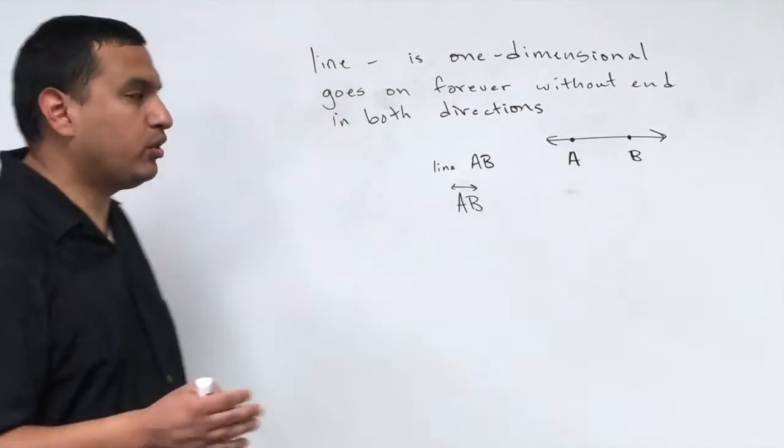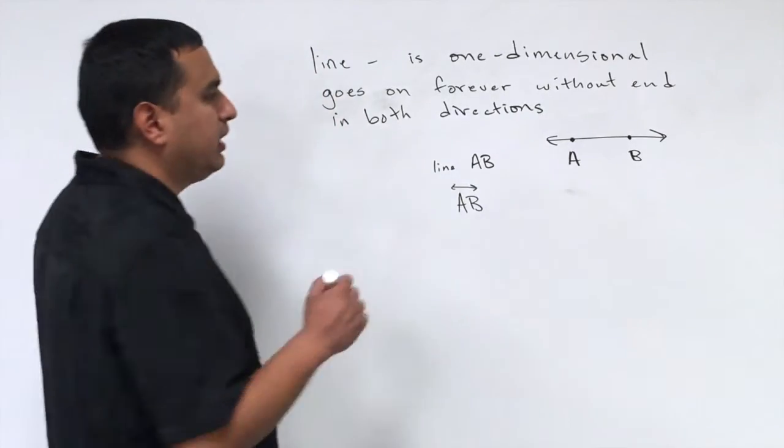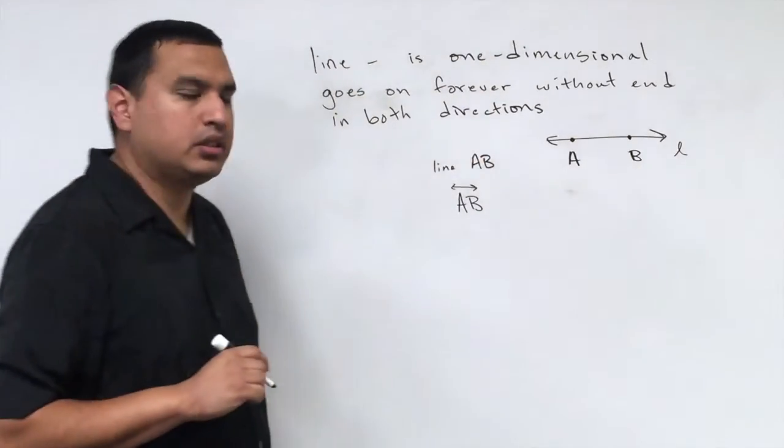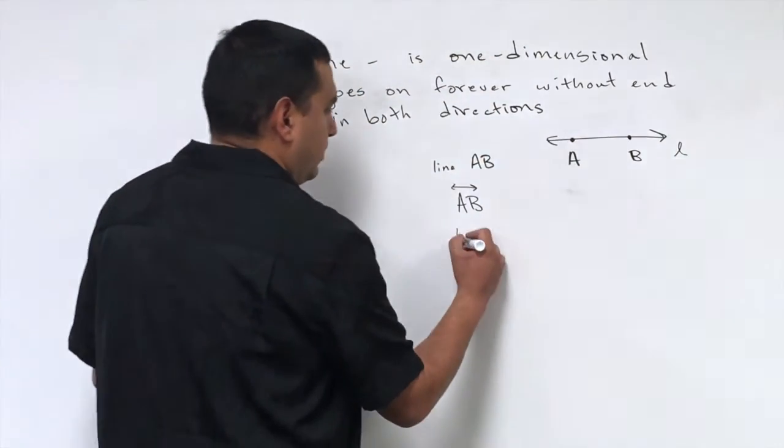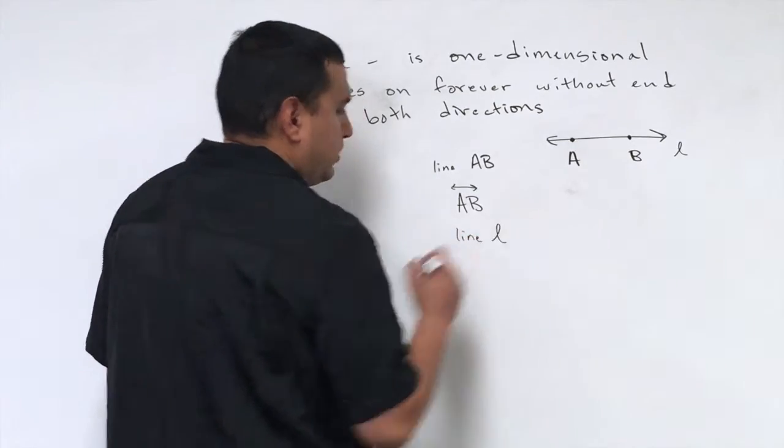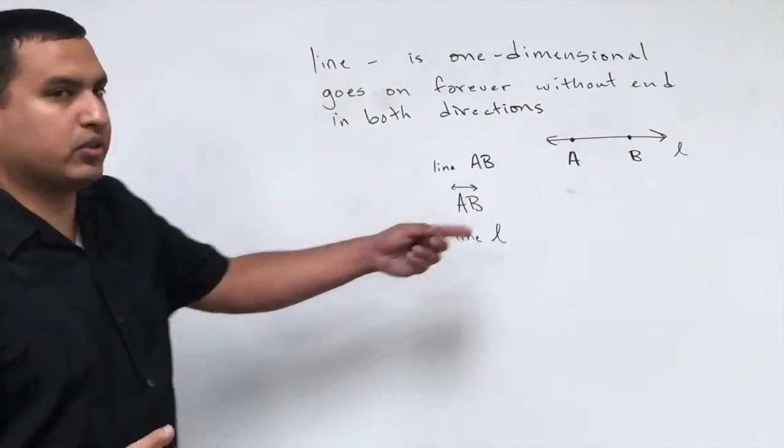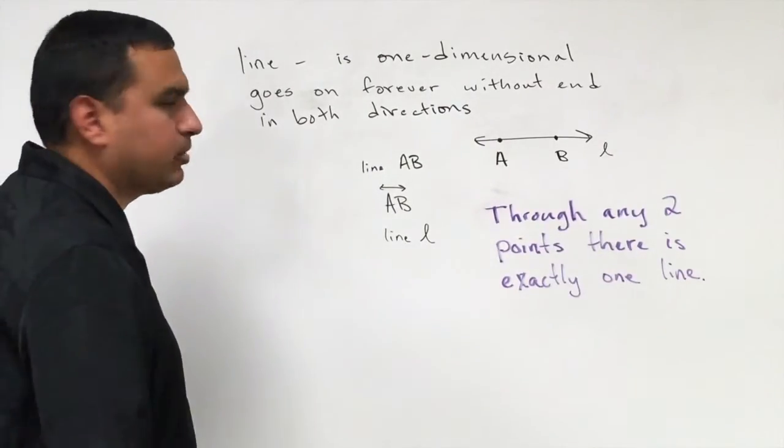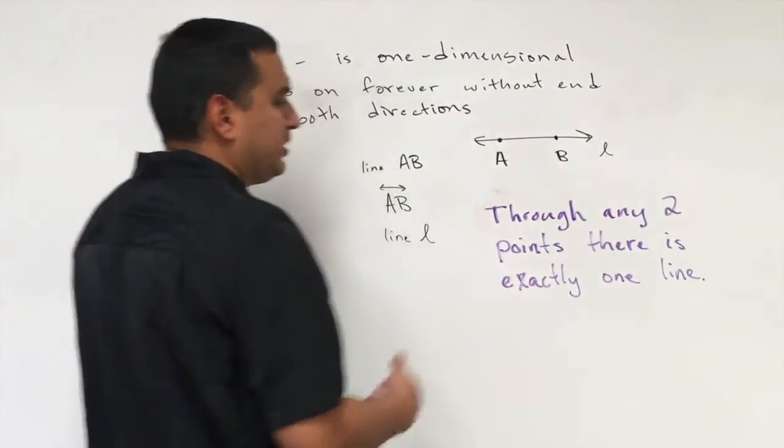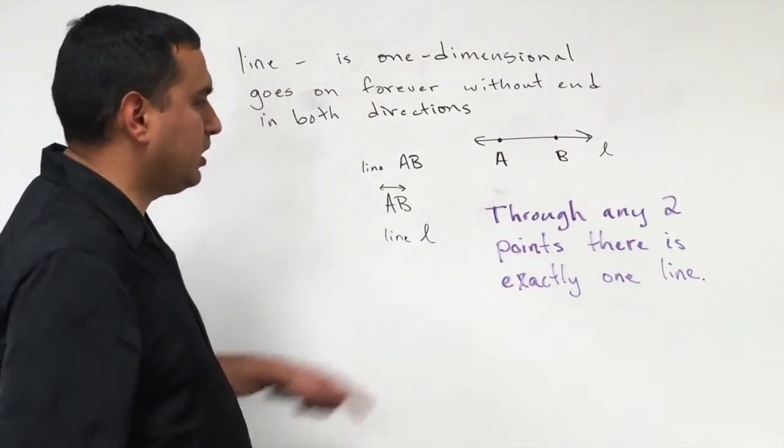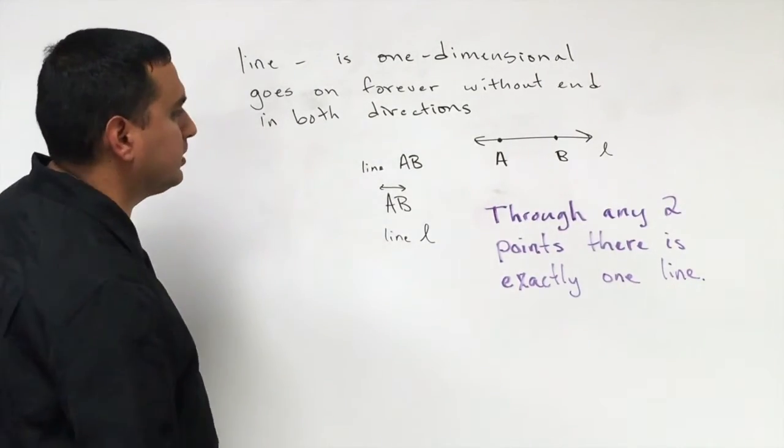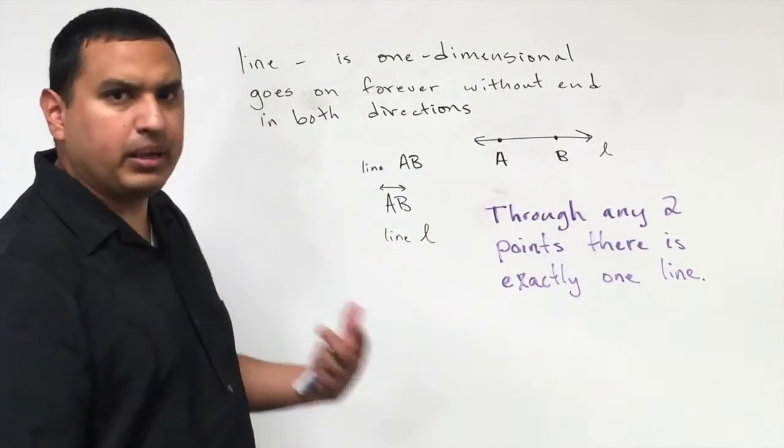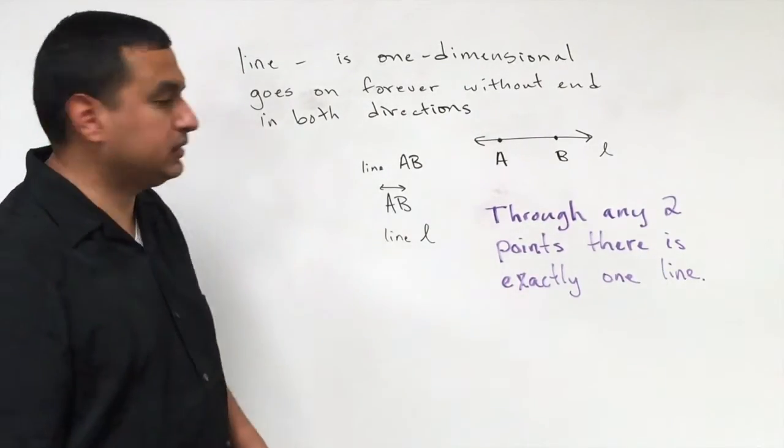Now there is a third way to name a line. The other way is that you'll see some kind of cursive letter. In this case, I did line L as an alternate way of describing or naming this line. And something important that you need to remember, you need to know, is that through any two points, there is exactly one line. We'll talk a little bit about this later in a different lesson. So it is something you do need to remember about lines and points on a line.